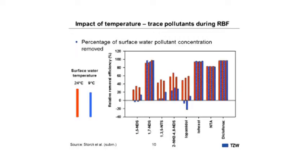Now switching to bank filtration sites. Here we see the removal efficiency for several trace pollutants, where red bars represent high surface water temperature and blue bars represent low temperature — a difference of 15°C. Removal is presented for increasing retention times from left to right. For 1,5-naphthalene disulfonate, there is little removal — not more than 35–36% at high temperature. At low temperature, removal is almost non-existent.